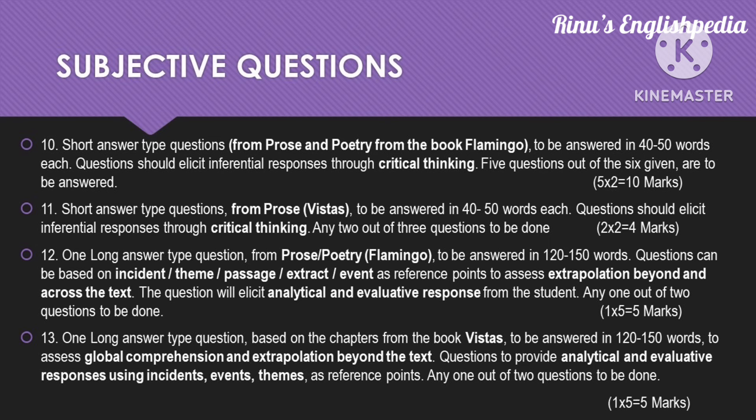For question nine, you will be given six questions out of which you have to attempt five. The word limit for each answer is 40 to 50 words and the total weightage is 10 marks — each question is two marks. The next question will also be short answer type questions but from the prose section of Vistas, to be answered in 40 to 50 words. Three questions will be given and you have to attempt any two. Both questions 10 and 11 are based on critical thinking and inferential responses — question 10 is two marks and question 11 is four marks.